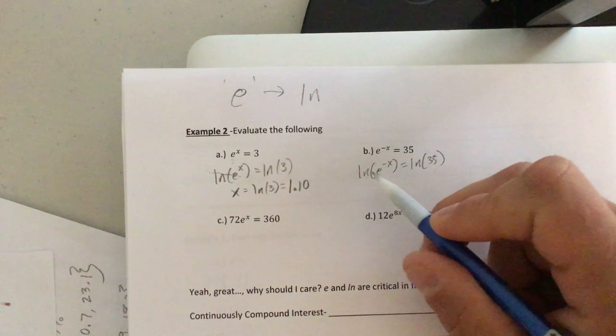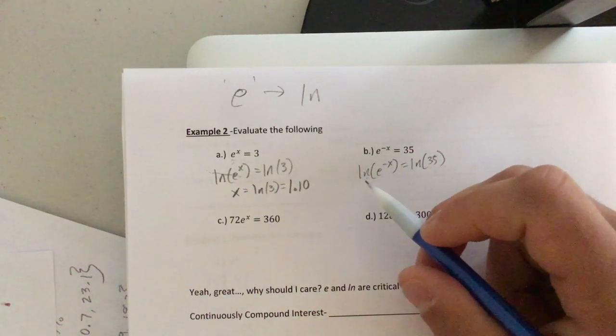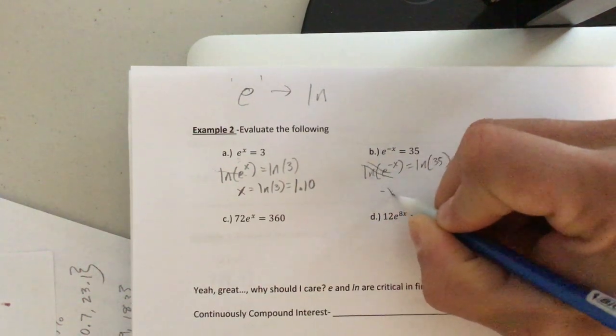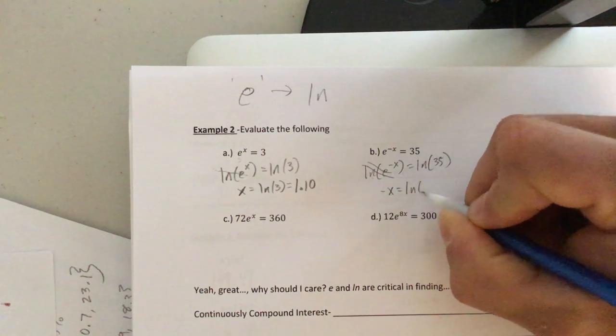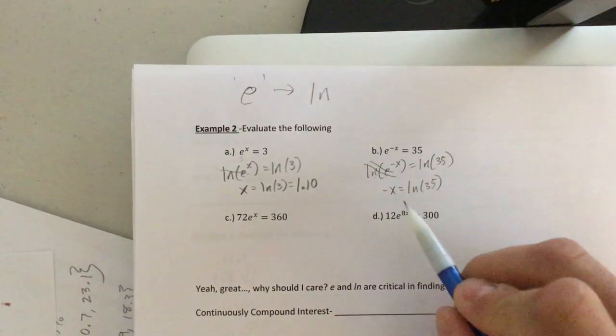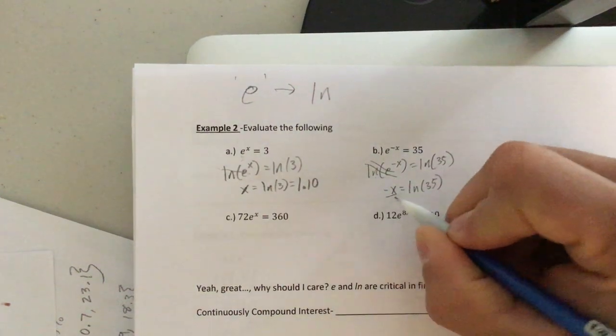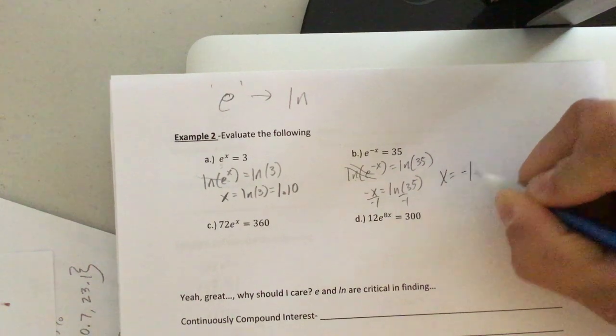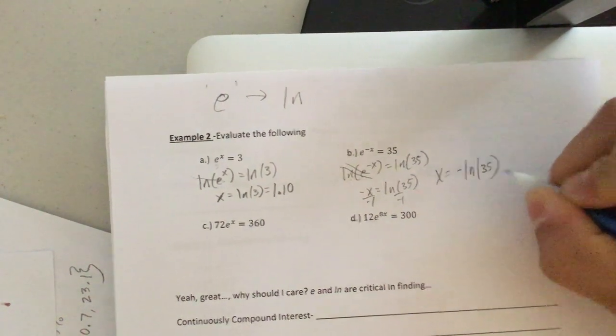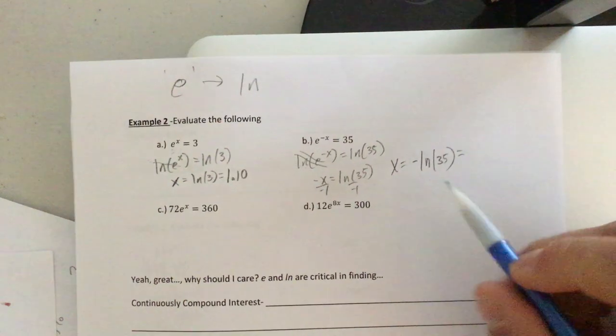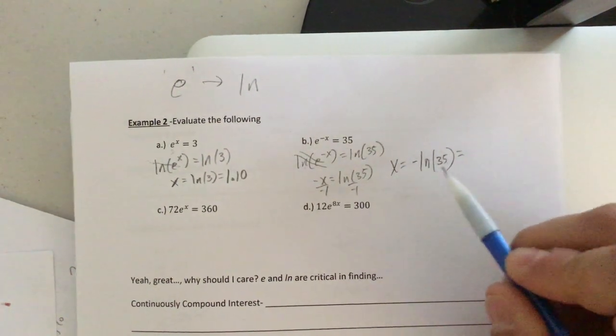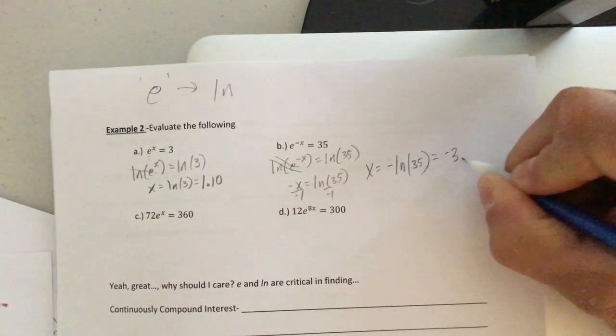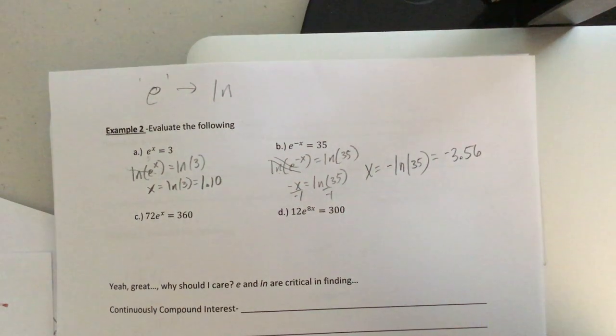Well, when we do that, the natural log and E, they're inverses. Just like squaring and square roots, just like multiplication, division, addition, subtraction, they're inverses. So these cancel. We're left with negative X equals the natural log of 35. Okay. But we don't want negative X. We want X. Divide both sides by negative one. So X equals the negative natural log of 35. And once again, if you type this in, 35 in your cell phone calculator, press natural log, then we want the negative of that answer. Or in this case, negative 3.56.